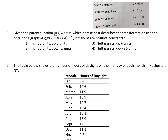They give us this function right here — they call it the parent function. They want to know which transformation describes what happens when we add 'a' within the function, right, within the parentheses, and subtract 'b' to the end of the function. If we add a number within a function, see how we add a number within a function — it moves it to the left.